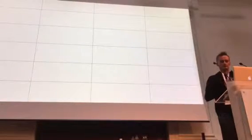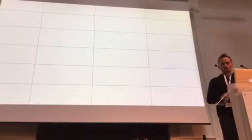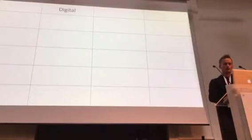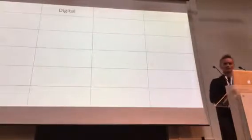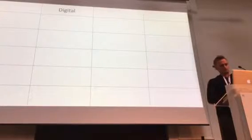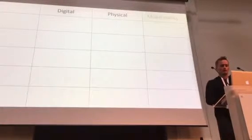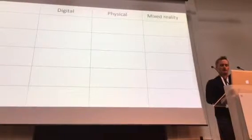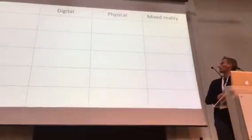This is an essay or argument paper structured around a table. We first define three domains of interaction: digital or artificial, physical or real, and mixed reality — something that combines both digital and physical elements.